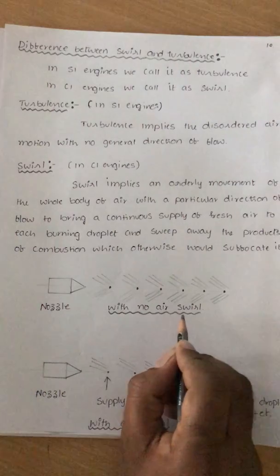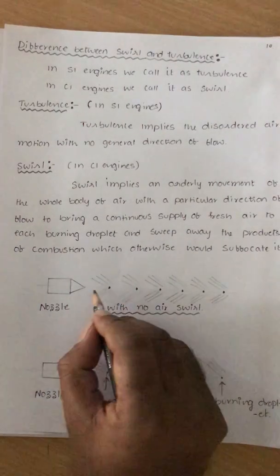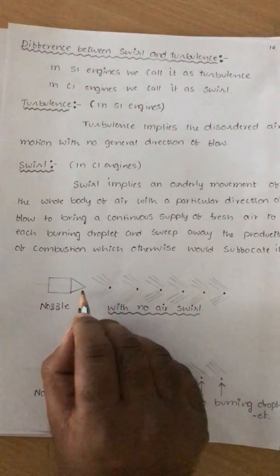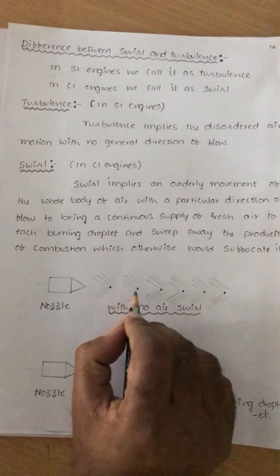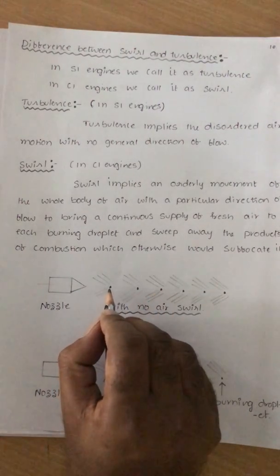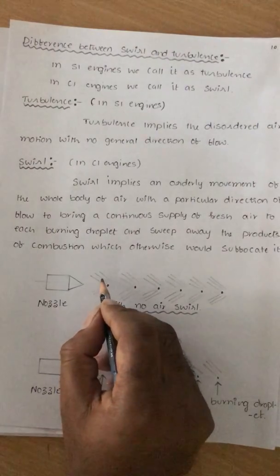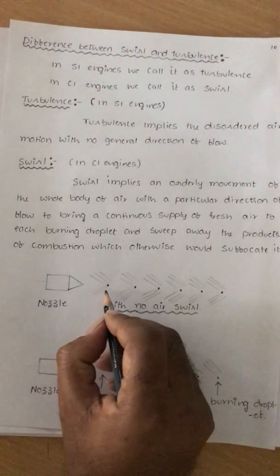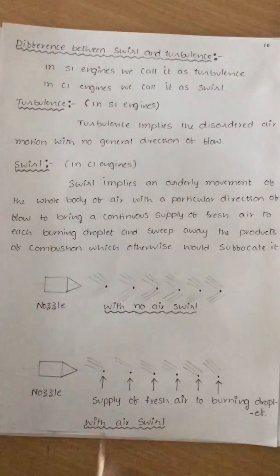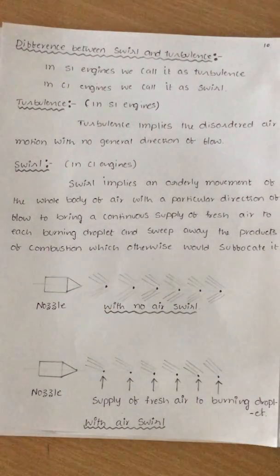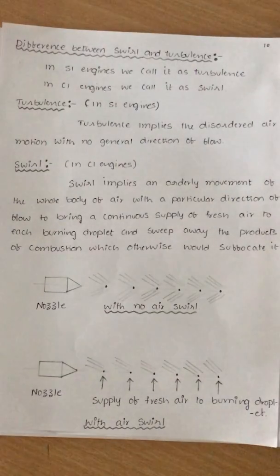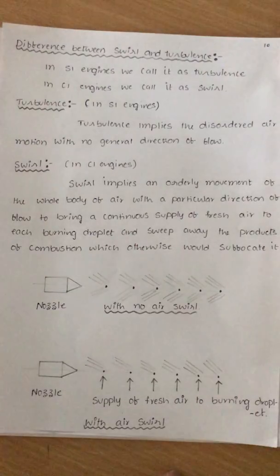For example, with no air swirl, these are the droplets coming from the fuel injector through the nozzle. With no air swirl, the products of combustion surround the droplets. This means the fuel particles are not getting oxygen — they are not burning, not participating in combustion. So they remain as they are and go out in the exhaust without participating in combustion. That has to be reduced by the help of swirl.